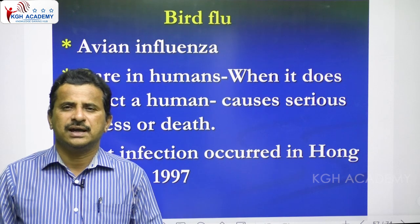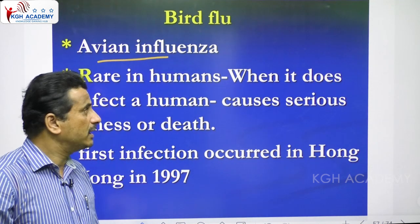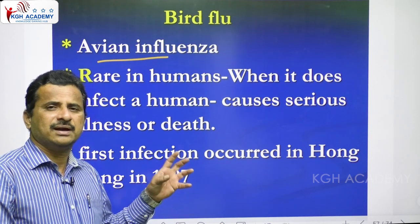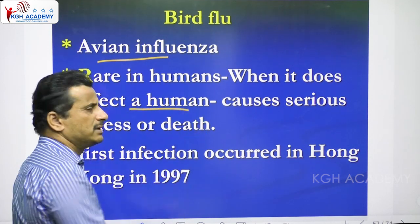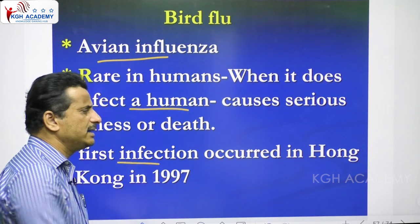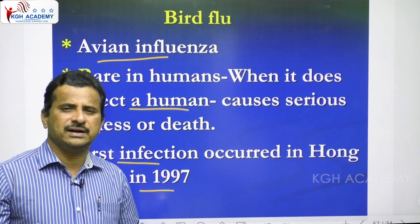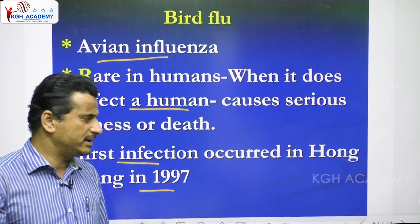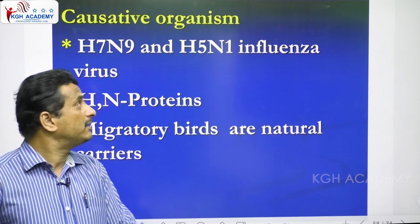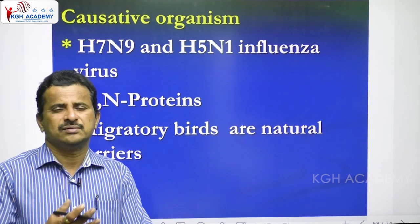Bird flu, also called avian influenza or avian flu, is rare in humans — not as common as swine flu. But if anyone is affected, there is a chance of serious illness or death. Bird flu was first identified in Hong Kong in 1997. After that, many cases were identified in different regions and countries. The causative organism is a virus — one type of influenza virus causes bird flu.